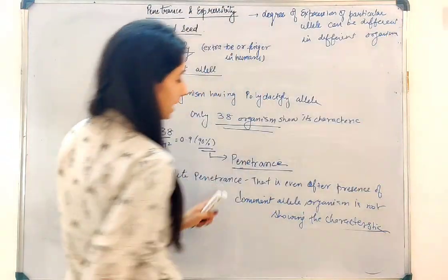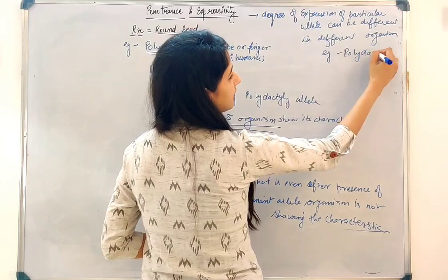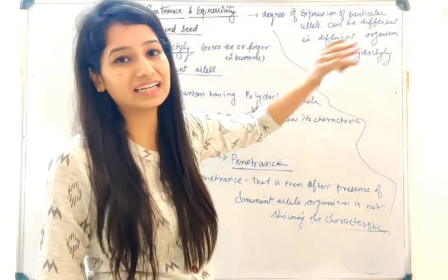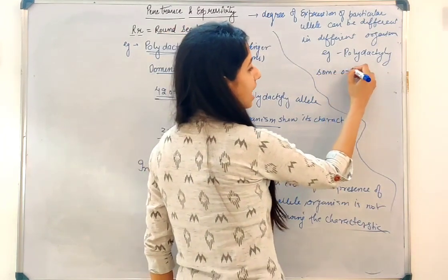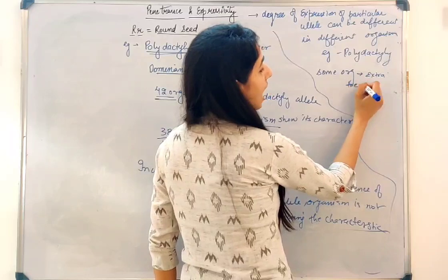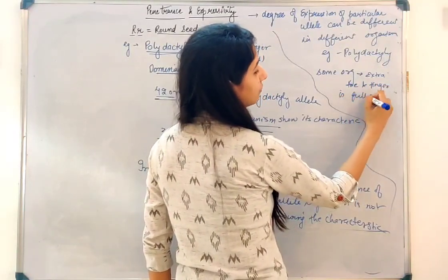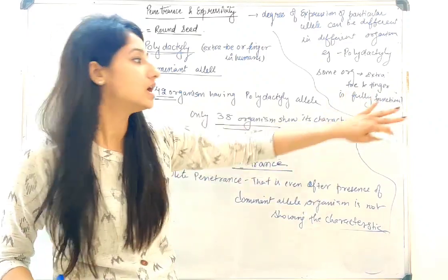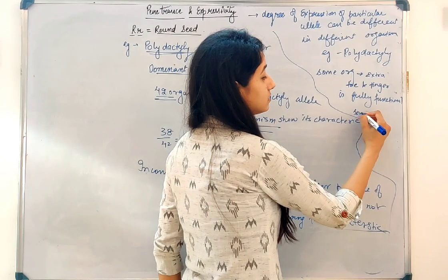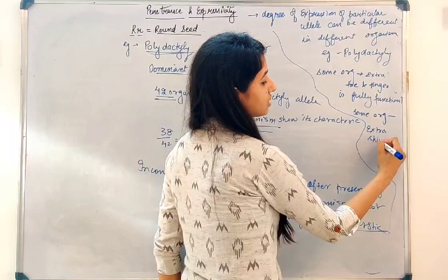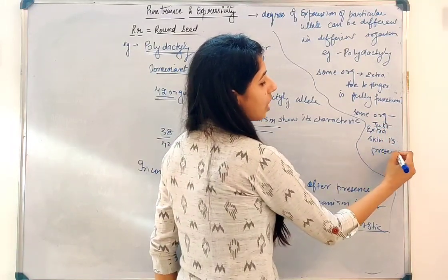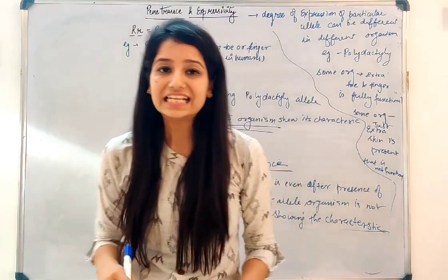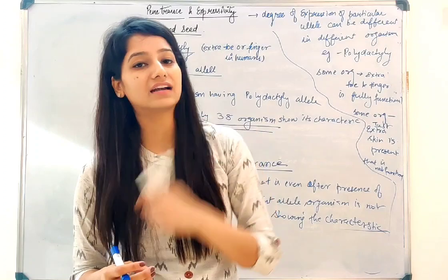For example, if we once again take the example of polydactyly: if organisms have this dominant polydactyly allele, in some organisms it can occur that the extra toe or finger is fully functional. That means the expression of this gene has occurred totally — the expressivity is total, that's why it is fully functional. But it can occur that in some organism, just extra skin is present, which is not functional. So the expressivity is different — the allele is the same, but the allele is expressing itself at a different degree. That is expressivity.